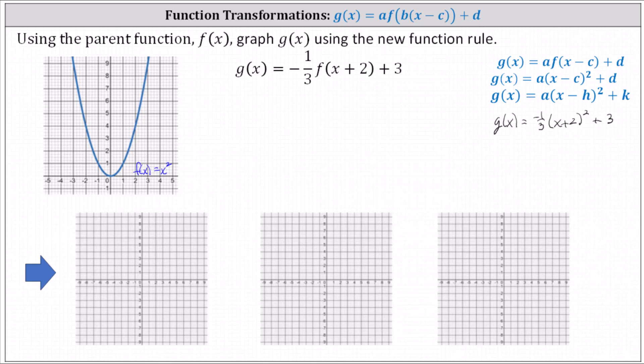Comparing this to our function rule for g of x, notice a equals negative one-third, b the coefficient of x equals one, c is equal to negative two because x minus negative two simplifies to x plus two, and d equals positive three.